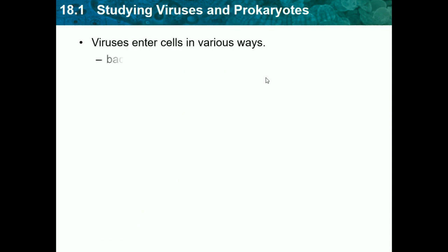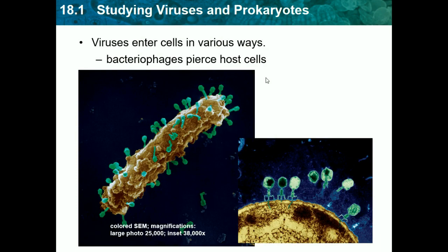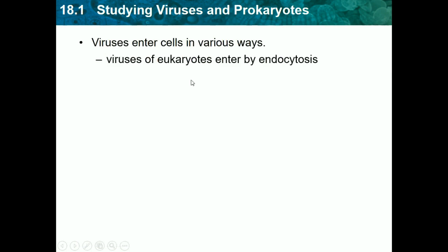Viruses enter cells in various ways. Bacteriophages pierce host cells — here we have a picture of viruses invading the host cell. They don't go into it but they inject their DNA into the cell. All these green things are the viruses and the yellowish-brown thing is the cell. Viruses of eukaryotes enter by endocytosis, and viruses of eukaryotes also fuse with membranes.